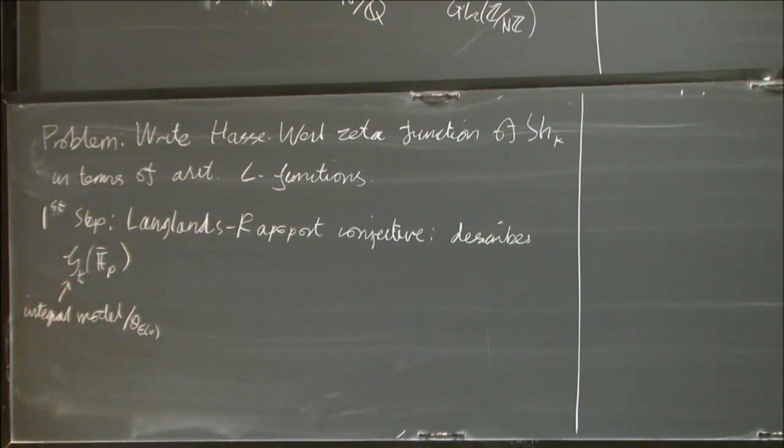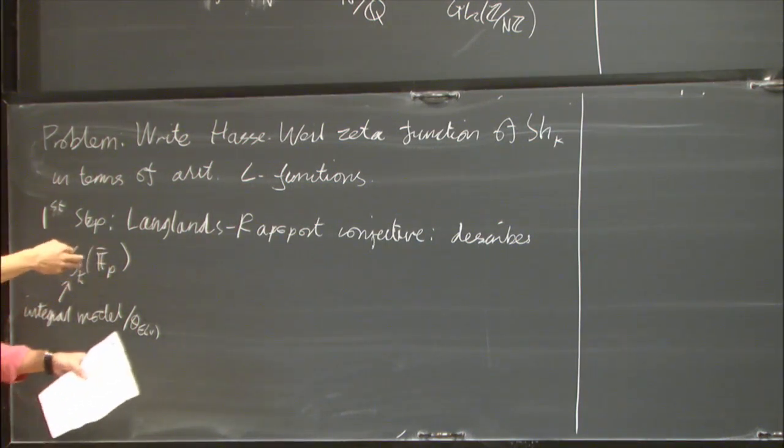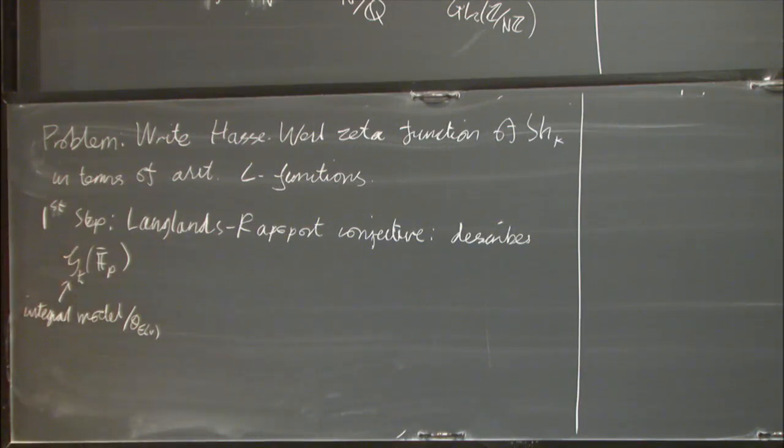The point is this Hasse-Weil zeta function is defined as a product of, as an Euler product of certain local factors. The local factors you can compute by counting the mod p^k points of certain integral models of the Shimura variety at that place. The Langlands-Rapoport conjecture describes the F_p-bar points of this integral model. Moreover, this description is amenable to comparison with the Arthur-Selberg trace formula.